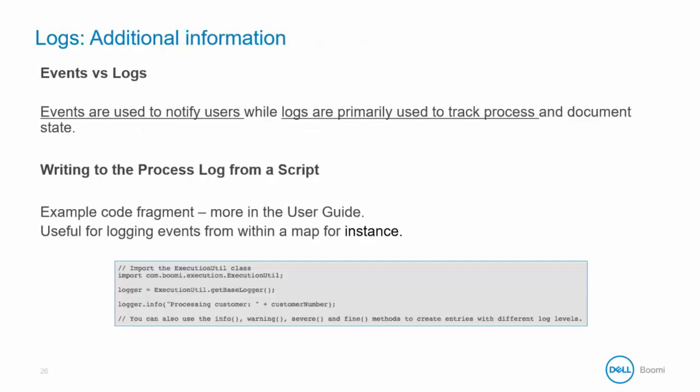There is a difference between events and logs. Events are used to notify users, while logs are primarily used to track process and document state. You can write to the process log from a script. An example code fragment is shown here, and there is more information available to you in the reference guide. This is useful for logging events from within a map, for instance.